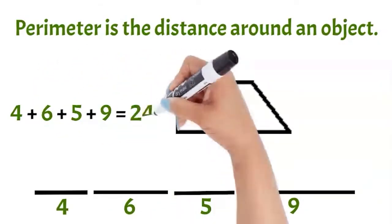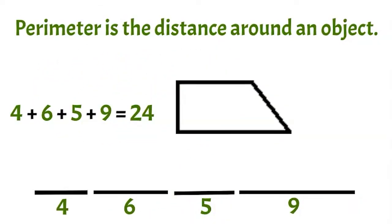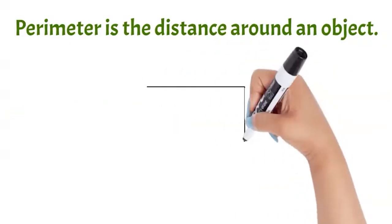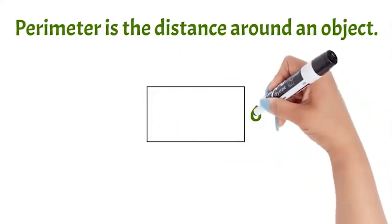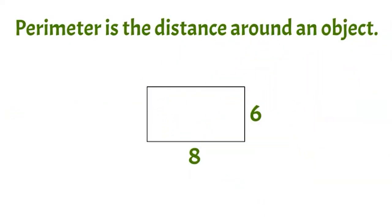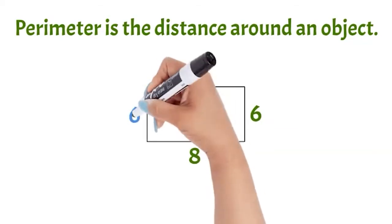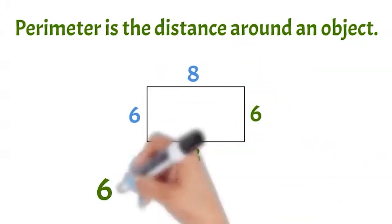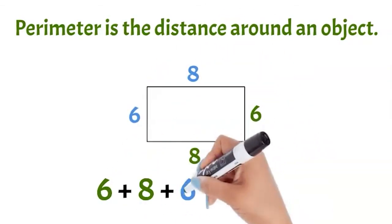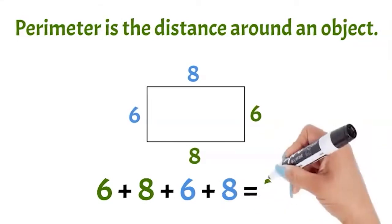4 plus 6 plus 5 plus 9 equals 24. This trapezoid has a perimeter of 24 units. Remember, in a rectangle or parallelogram the opposite sides are the same length, so even if you are only given two adjacent sides, you should know the other two sides as well. 6 plus 8 plus 6 plus 8 equals 28.